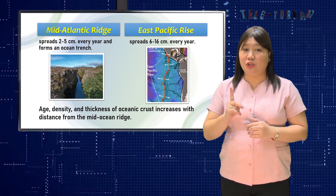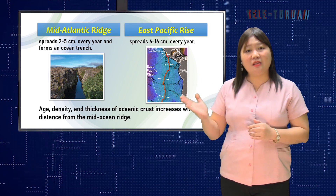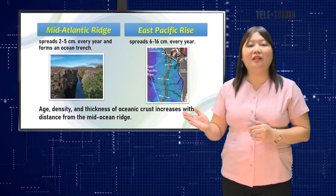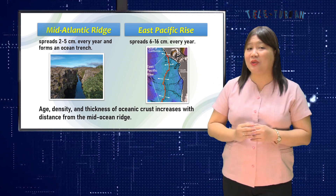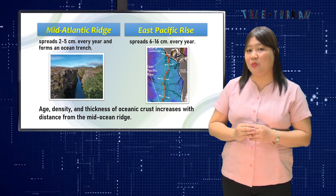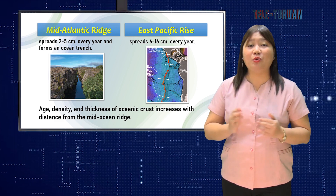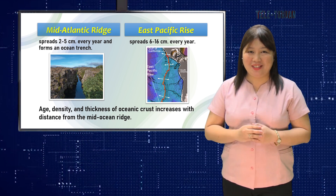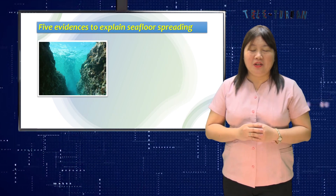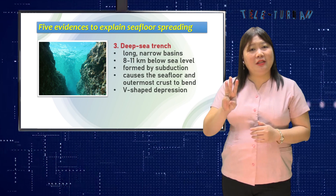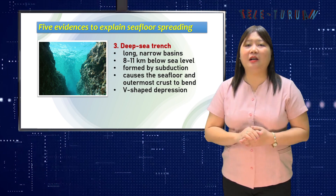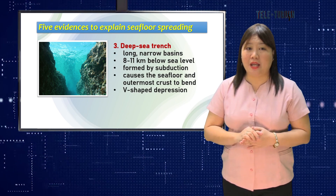Take note that age, density, and thickness of the oceanic crust increases with distance from the mid-ocean ridge. Third is the evidence of deep-sea trenches.